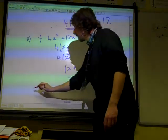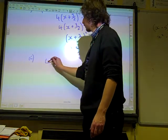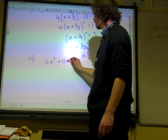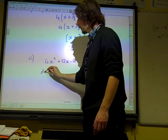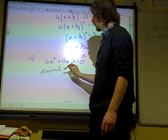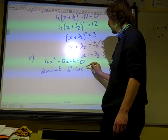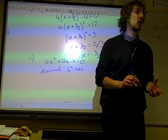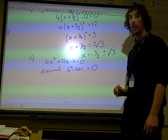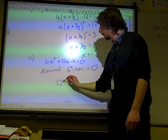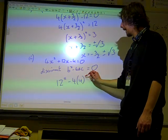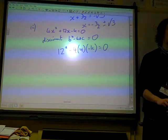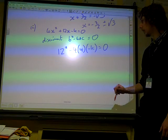4x squared plus 12x minus k. If it has equal roots, then the discriminant b squared minus 4ac, and what does it mean if it has equal roots? Equal 0. That means they're equal 0. So we've got 12 squared minus 4ac equals 0. It's just a case of throwing everything into this, seeing what we get.